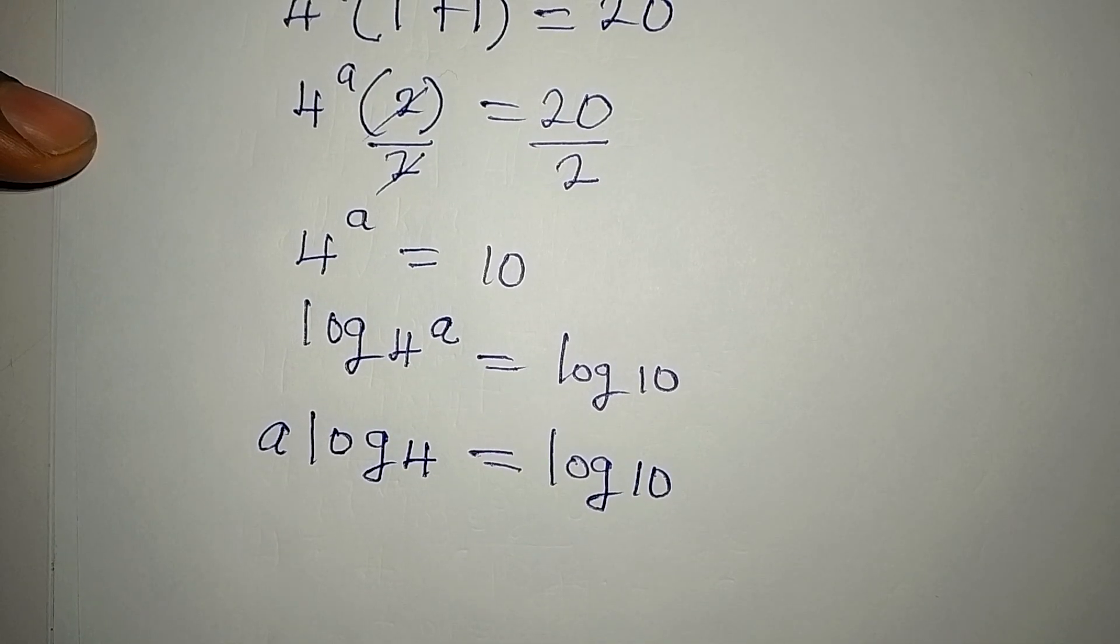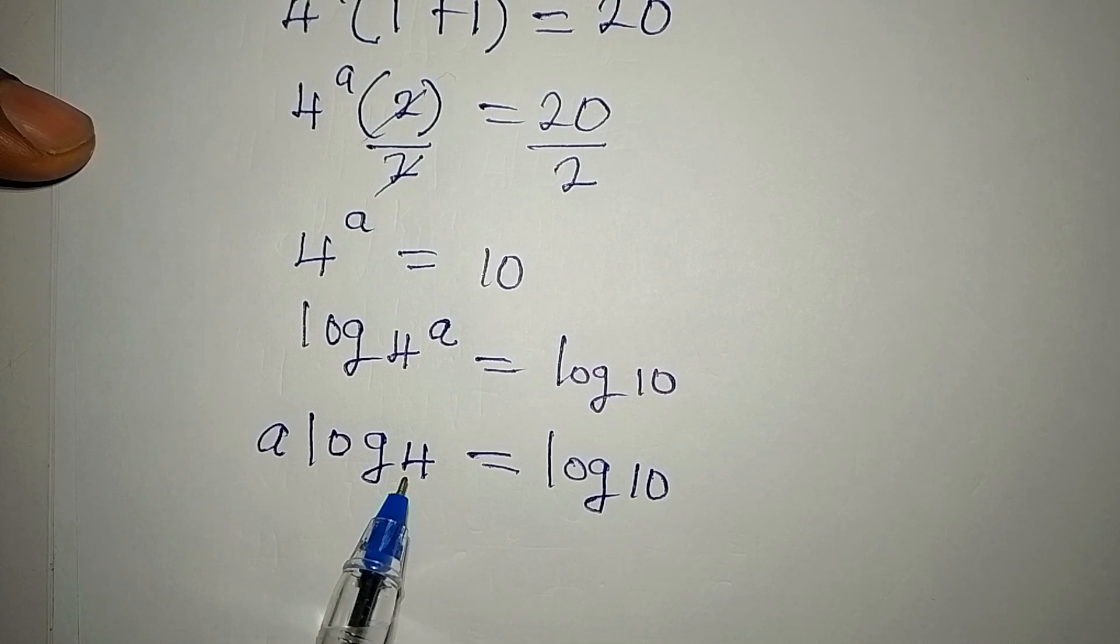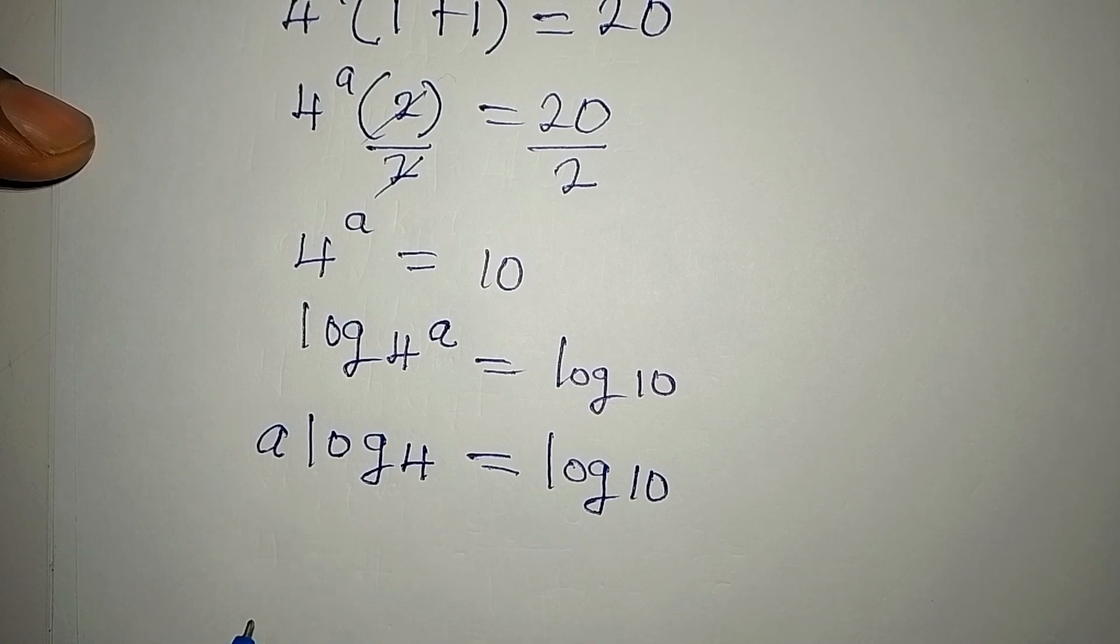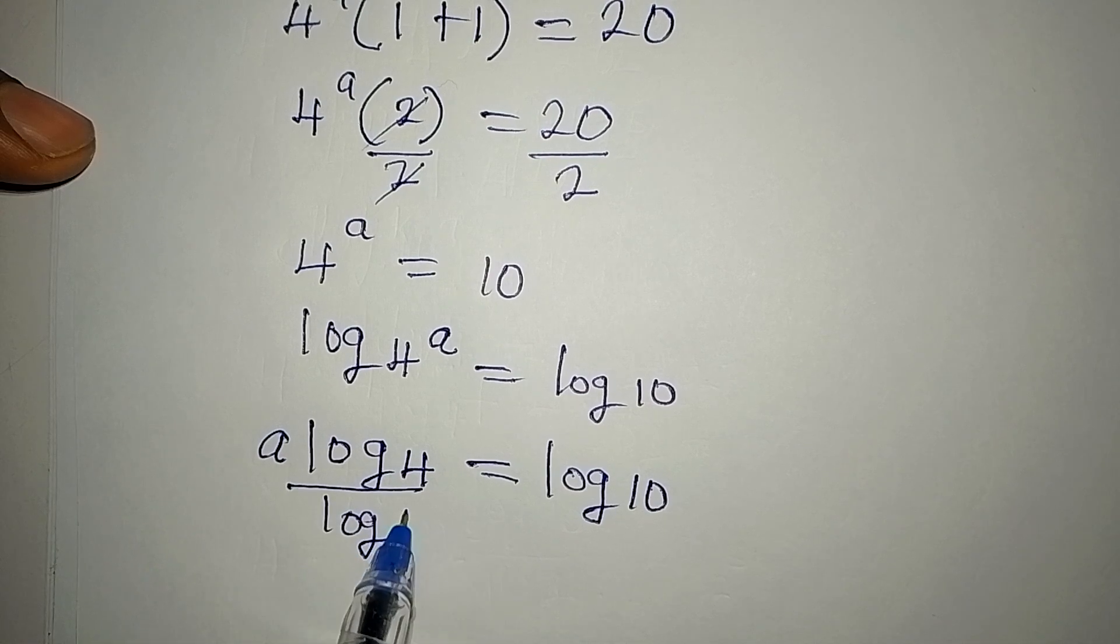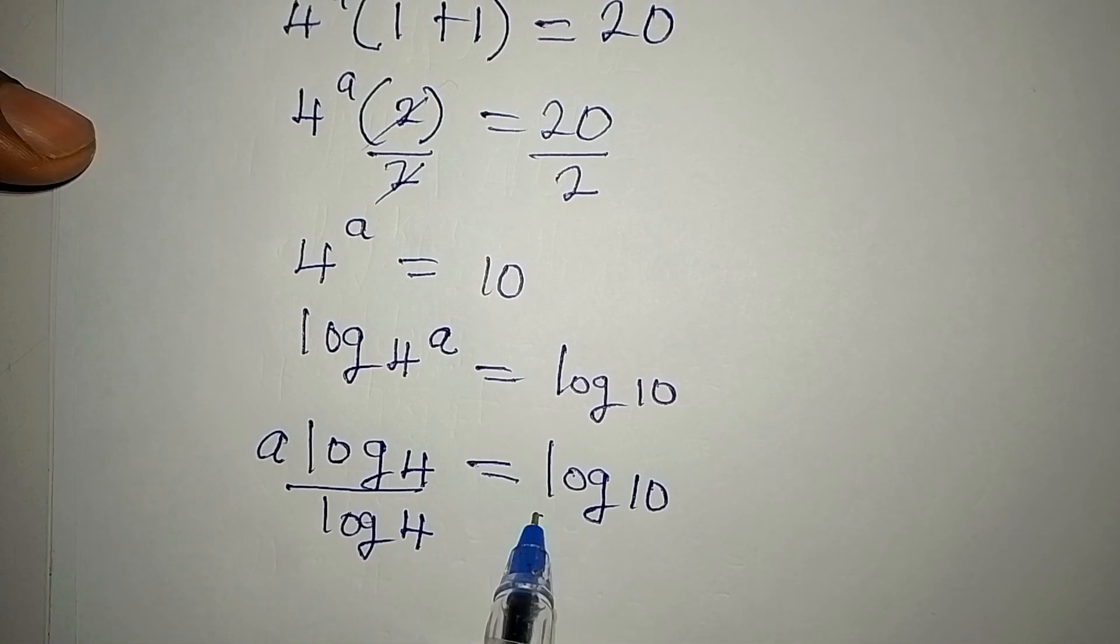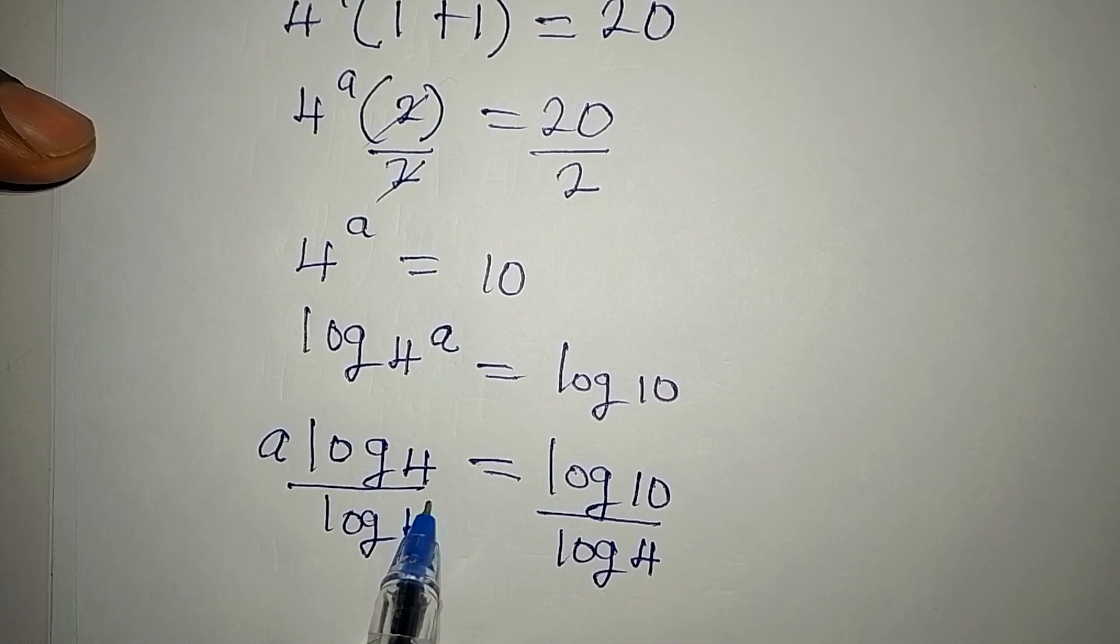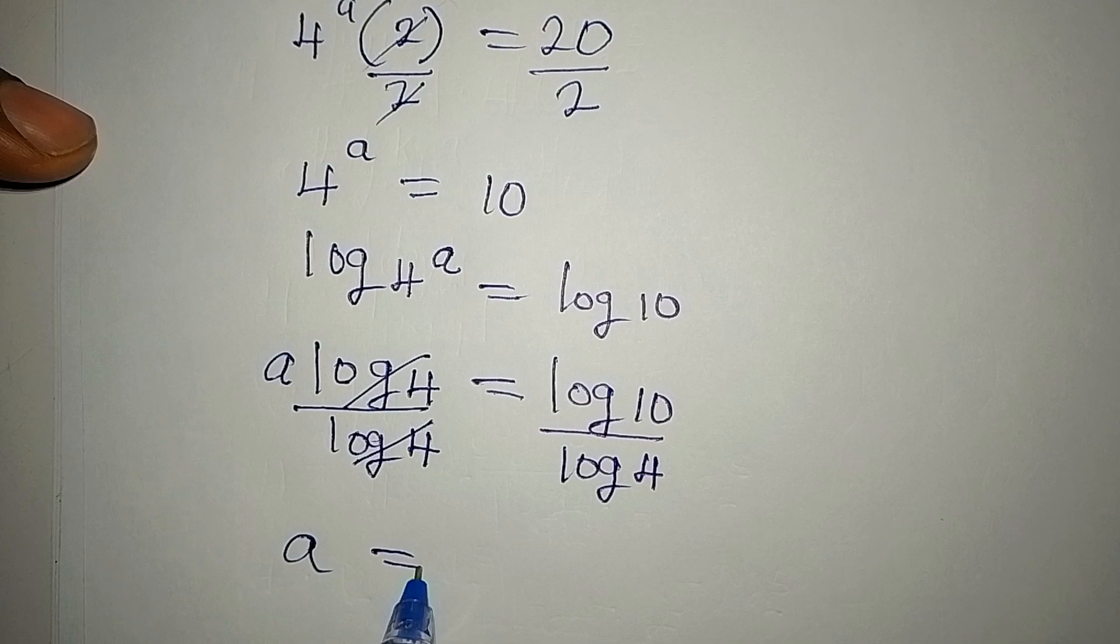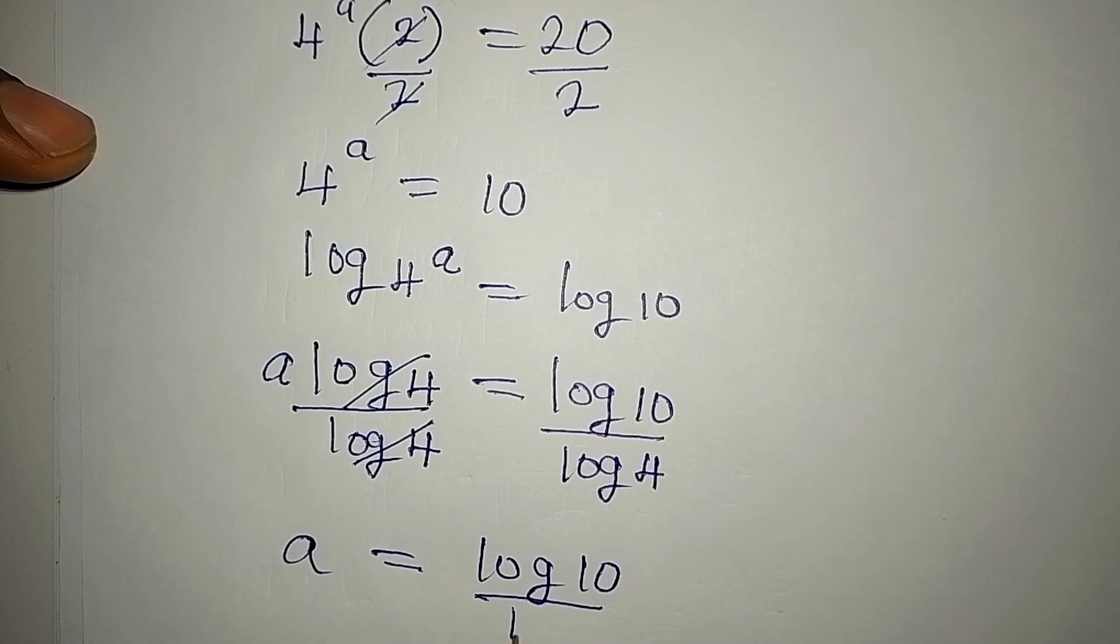We are looking for the value of a, so we need to remove log 4 from here. We do that by dividing both sides by log 4. So that this and this can go, and then a is now equal to log 10 over log 4.